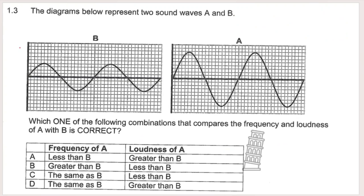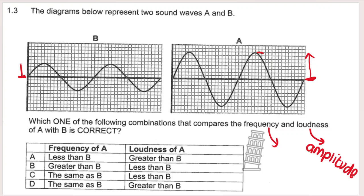Question 1.3: the diagrams represent two sound waves A and B. Which combination comparing the frequency and loudness of A with B is correct? Loudness is related to amplitude — the maximum displacement of a particle from its rest position. Looking at the diagrams plotted on the same grid, A has a much larger amplitude, therefore it has a greater loudness, so the loudness of A is greater than B. That immediately means options B and C are wrong.